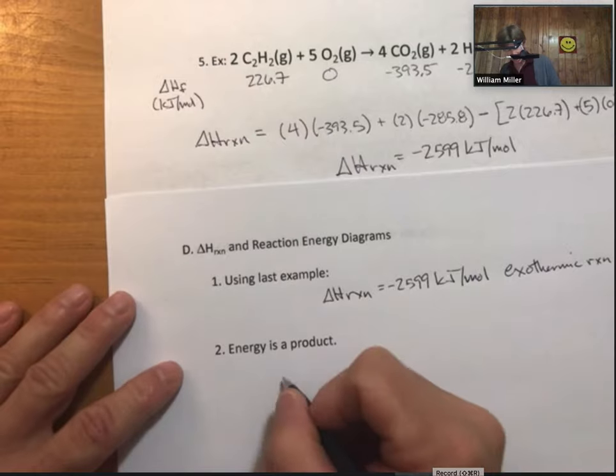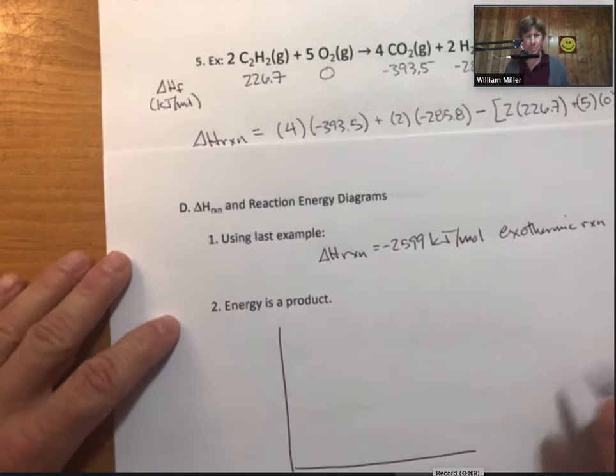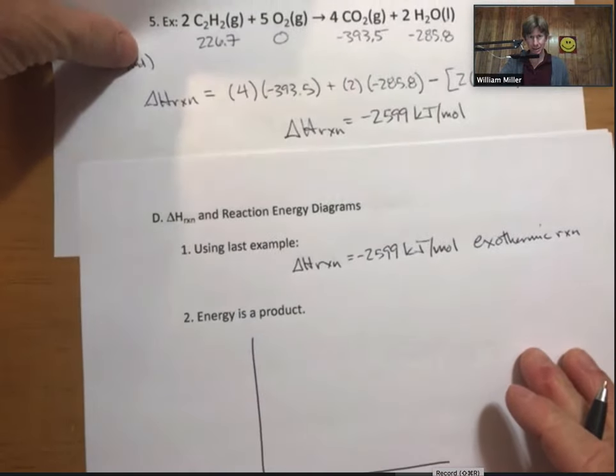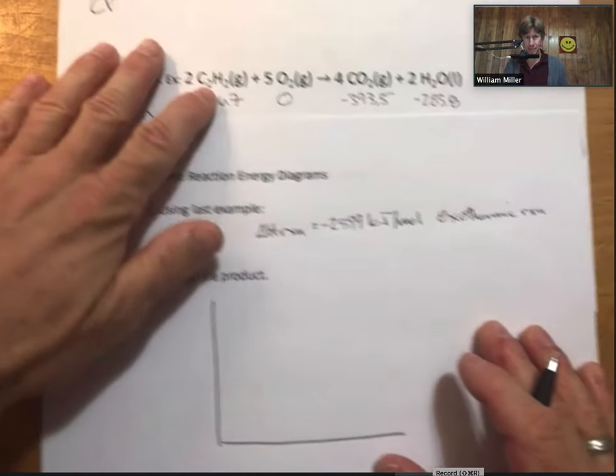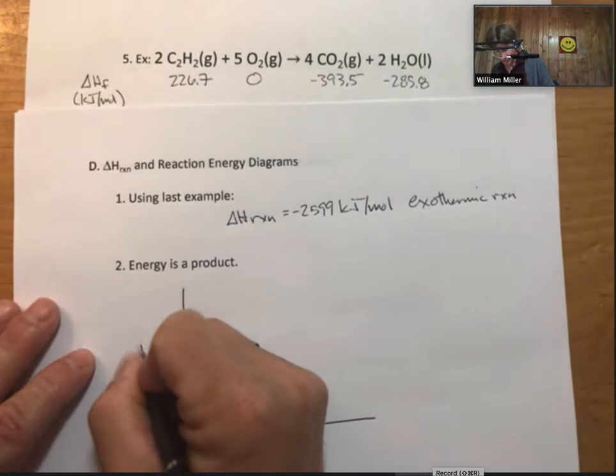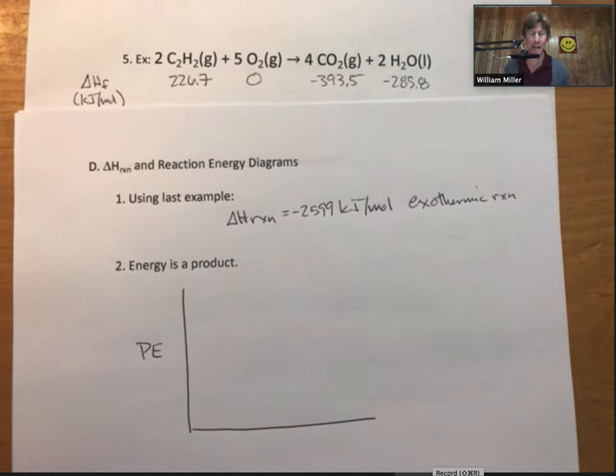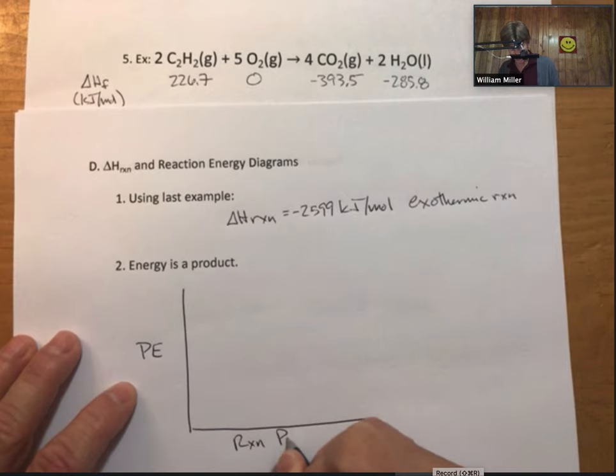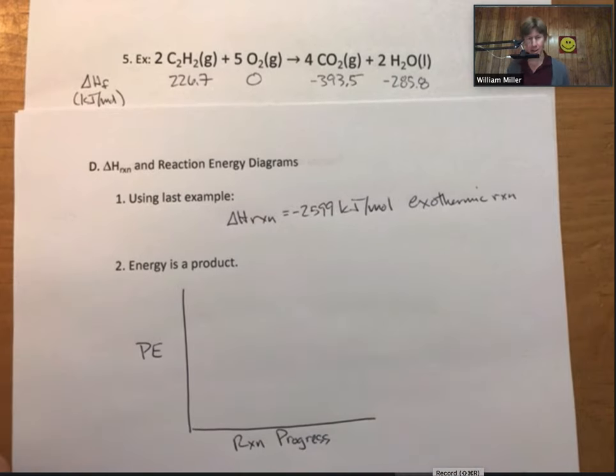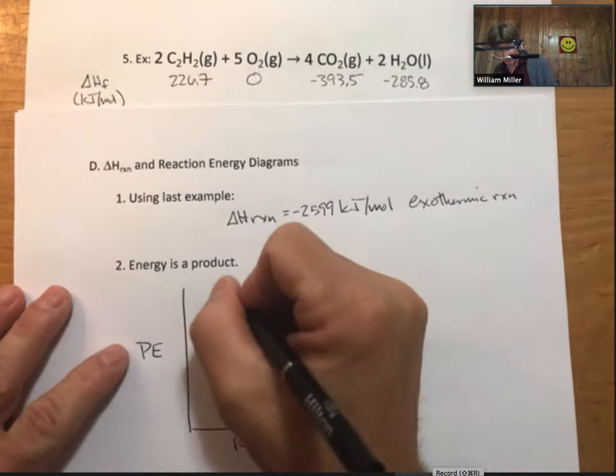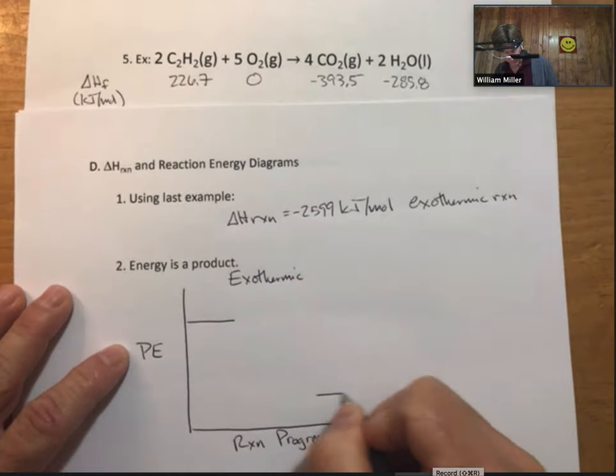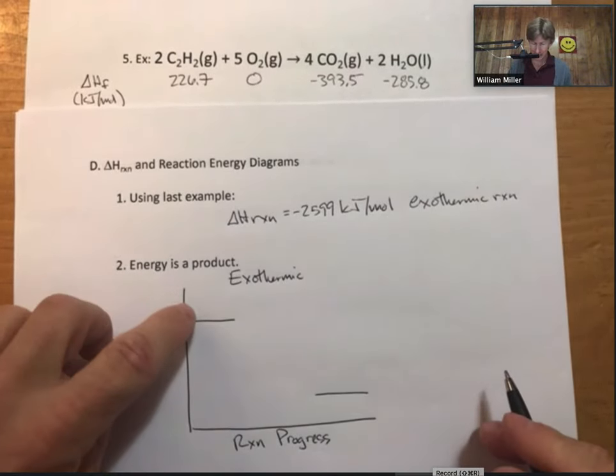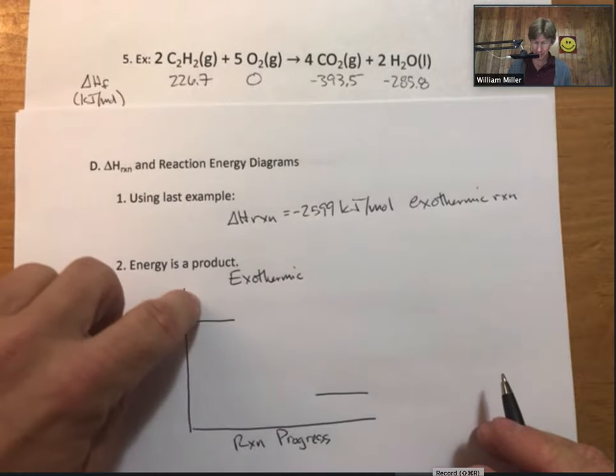And a reaction energy diagram. Let's see. There we go. There's our reaction. A reaction energy diagram is going to have potential energy on the y-axis. It's going to have something called reaction progress on the x-axis. And for an exothermic reaction, what I'm suggesting is that as you go from reactants to products, our reactants here,